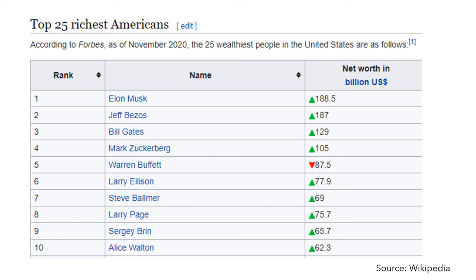The distribution of wealth in the United States also follows the power law distribution. A very small number of Americans are super rich. As of January 2021, the richest American was Elon Musk. His net worth was about $188 billion.